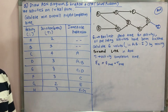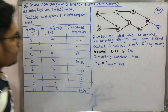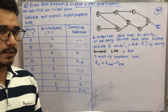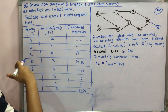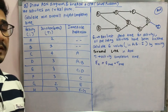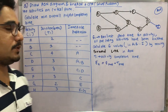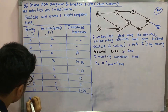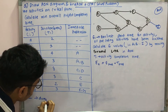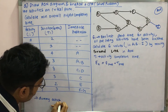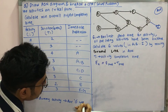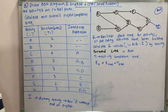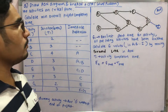Now you need to start drawing the AON diagram. Whenever you start a project you have initialization, planning, requirement gathering, and so on as consecutive activities. There is a deadline given by the client for project submission, which is not in this chart. So you consider it as a dummy activity.